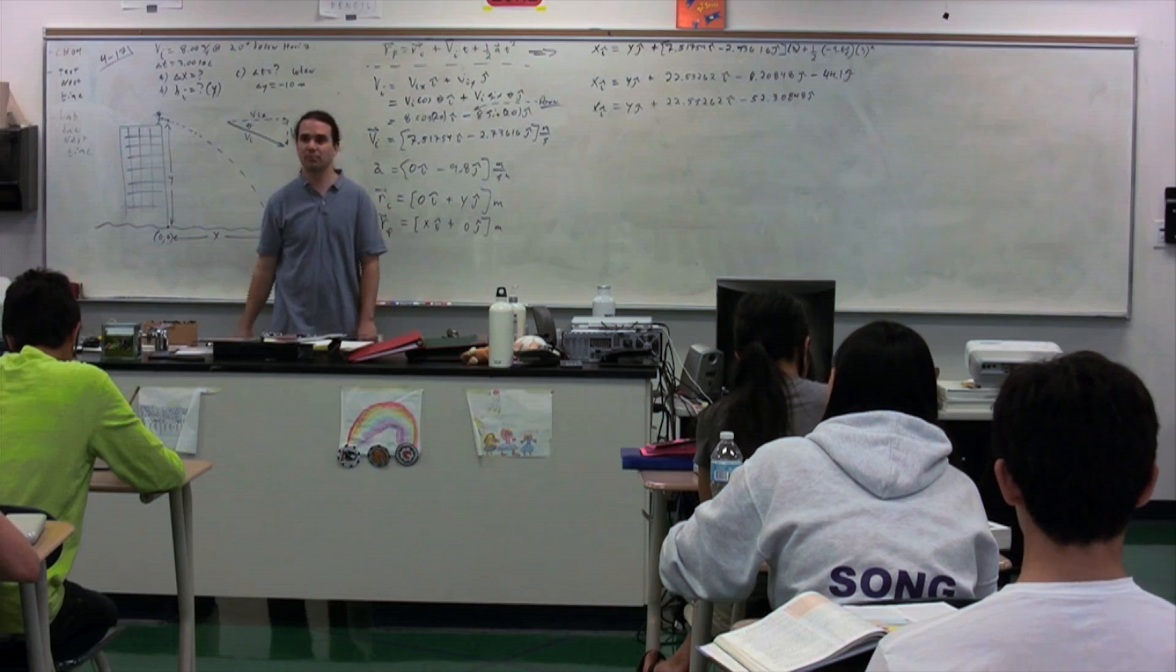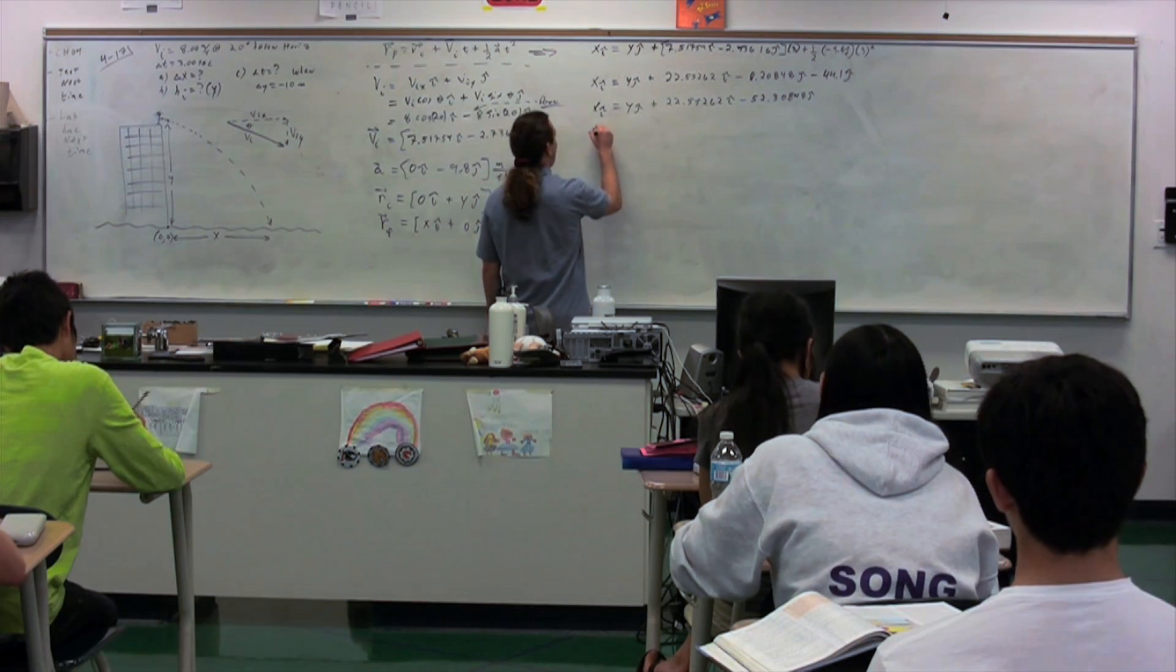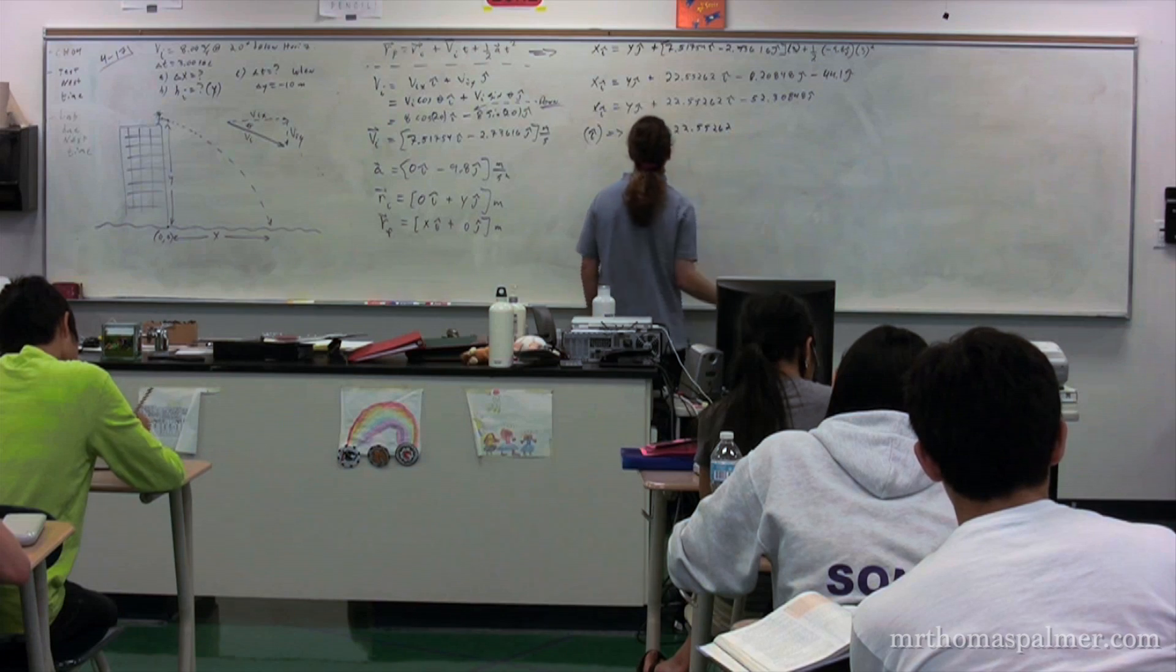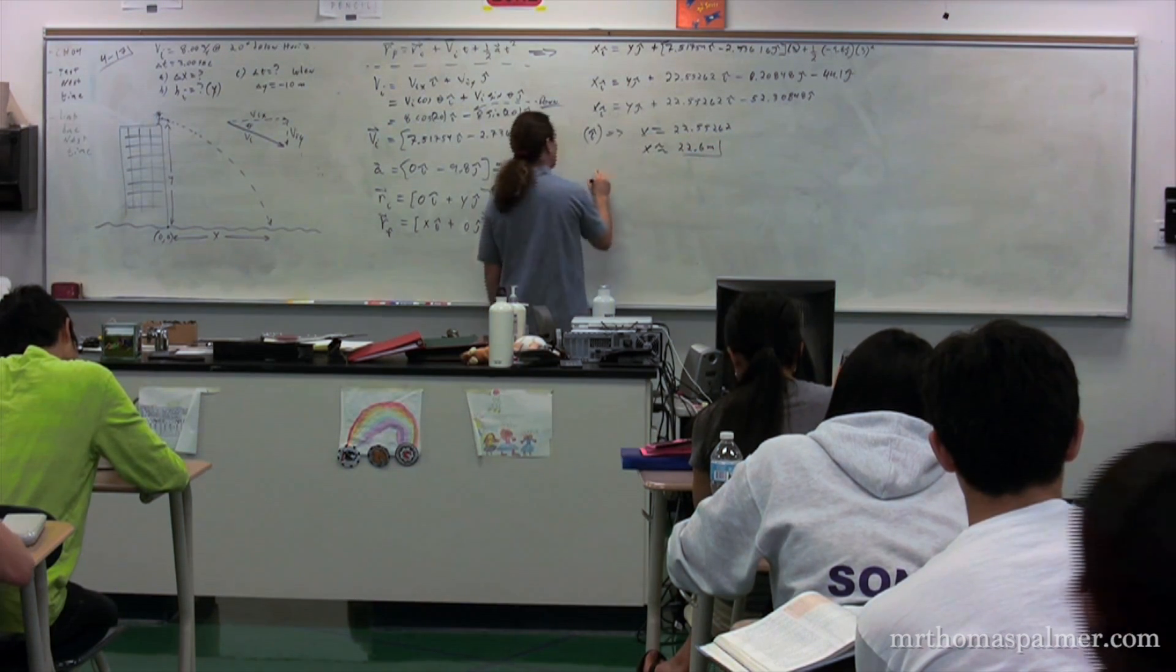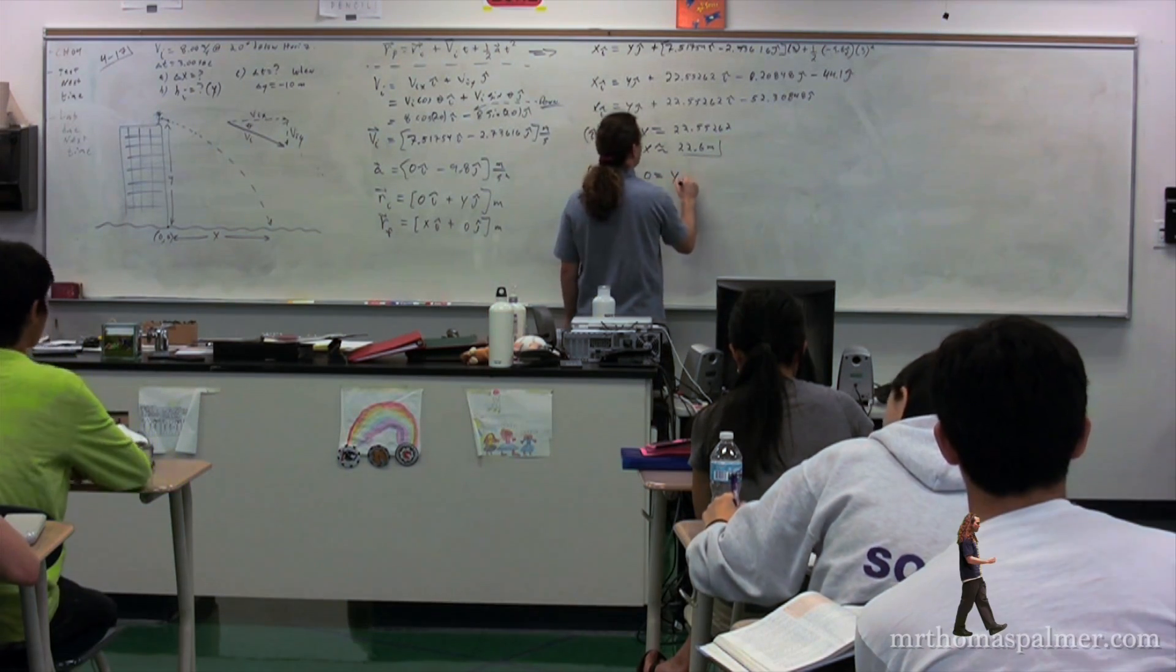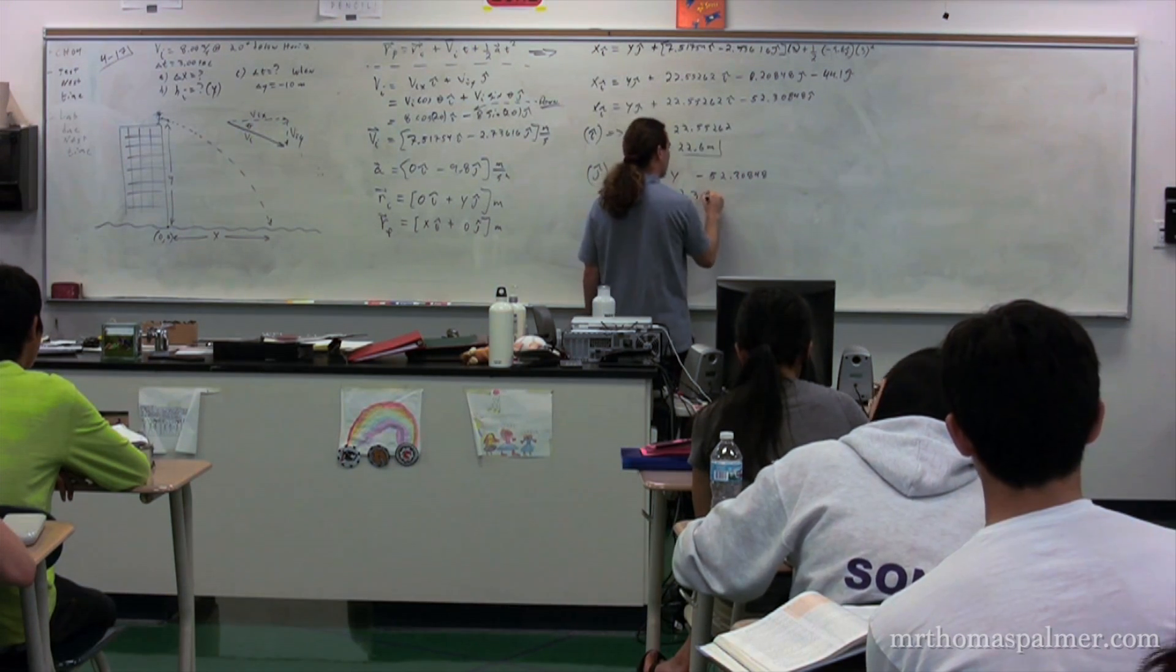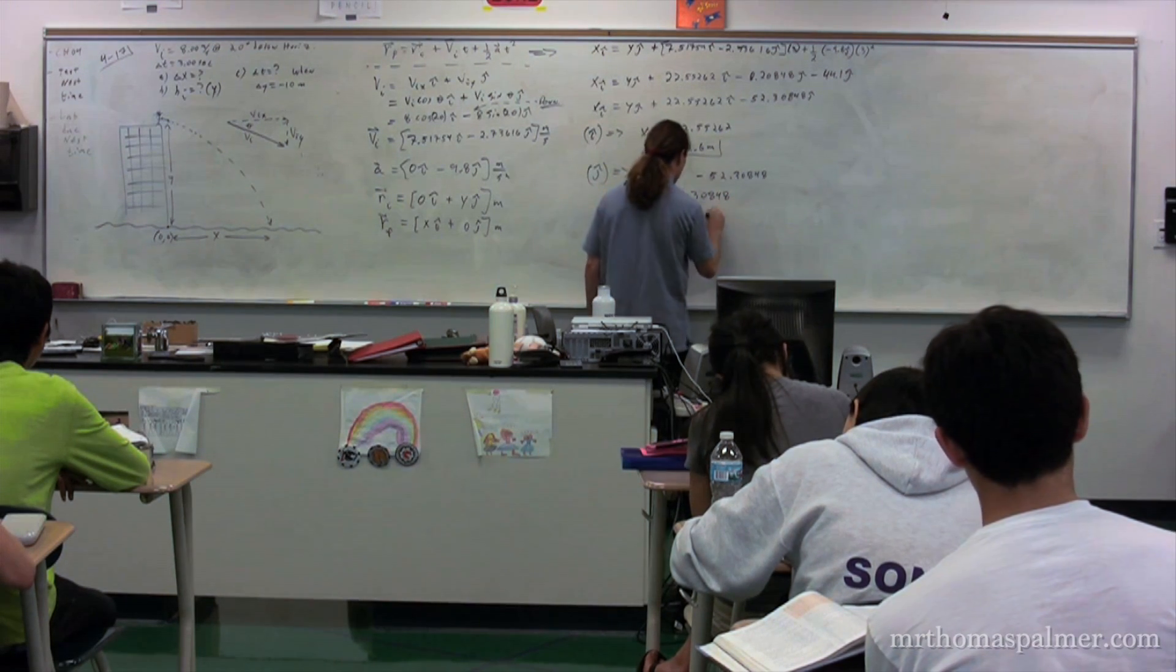So now, we pretty much have our answer, right? We can just look at the i's, for example. When we just look at the i's, we get x equals 22.55262. In other words, x is 22.6 meters. We can just look at the j's. Zero equals y times j minus 52, or y 52.30848. Or y is 52.3 meters.